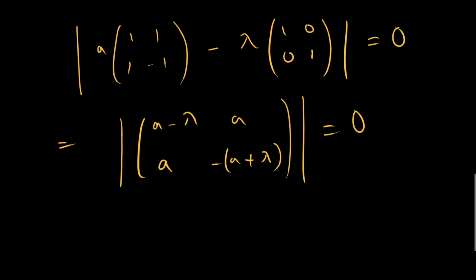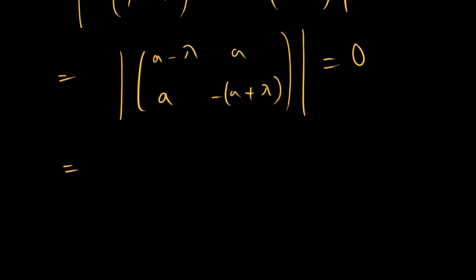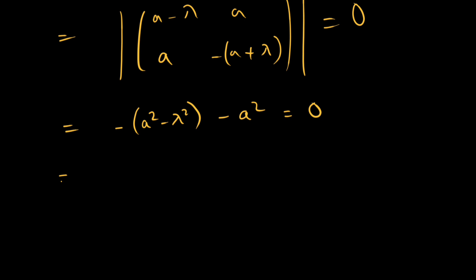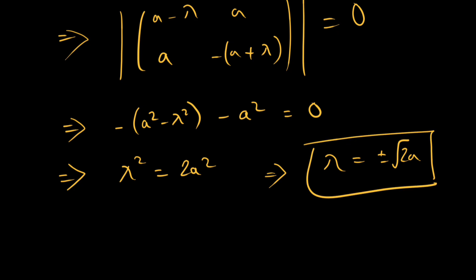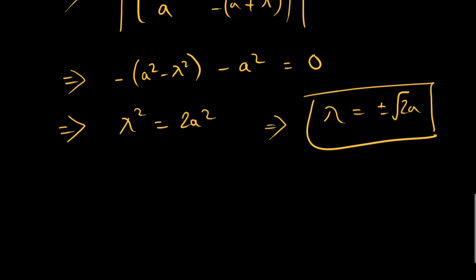Expanding the determinant gives −A² − λ² − A² = 0, so λ² = 2A². This implies λ = ±√2·a. There are two eigenvalues: +√(2)·a and −√(2)·a.